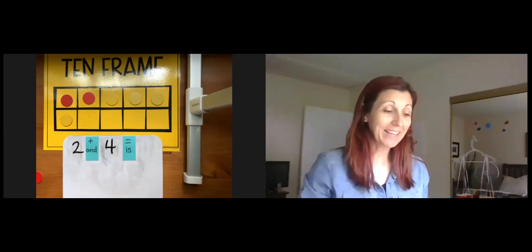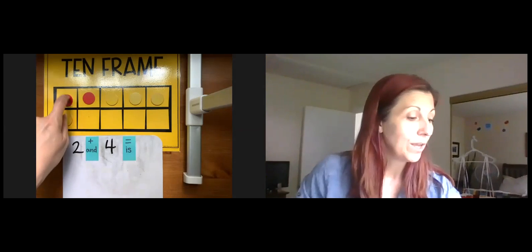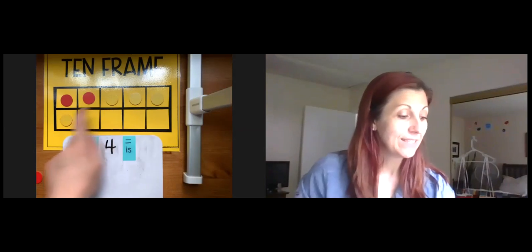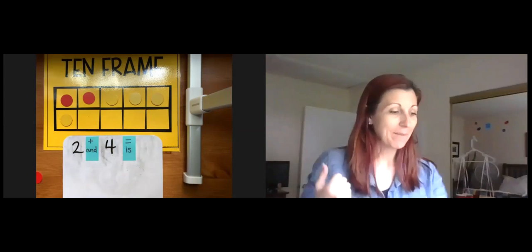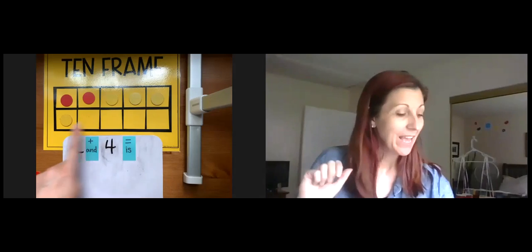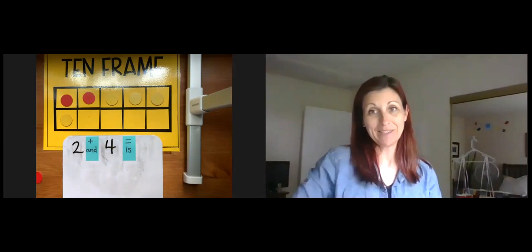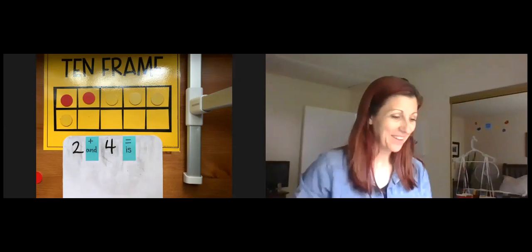Okay, so I can solve this in two ways. I can take a look and count all of the counters together. One, two, three, four, five, six. Or I can use what I know about a 10 frame and see that the top row is full, that's five. And then one more than five is going to be six.